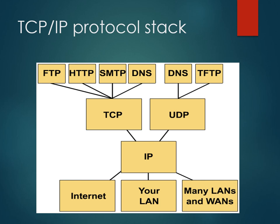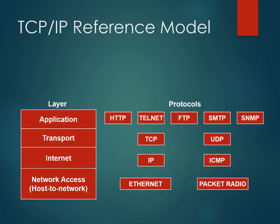TCP is connection-oriented and UDP is connectionless. TCP is directly associated with FTP, HTTP, SMTP, and DNS. FTP is File Transfer Protocol, HTTP is Hypertext Transfer Protocol, SMTP is Simple Message Transfer Protocol, and DNS is Domain Name System. UDP is connected by DNS and TFTP protocol.